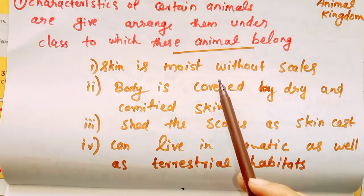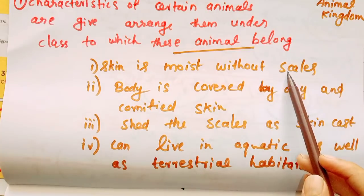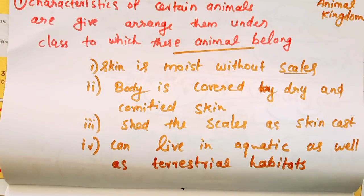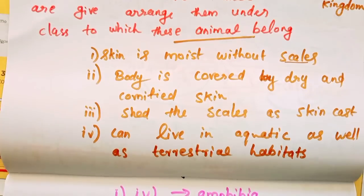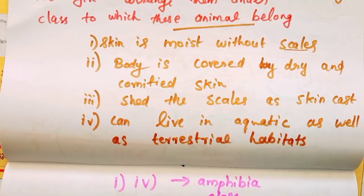We have: skin is moist without scales; body is covered by dry and cornified skin; shed the scales as a skin cast; can be aquatic as well as terrestrial habitat.